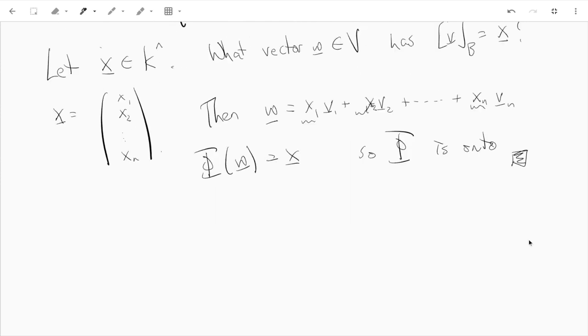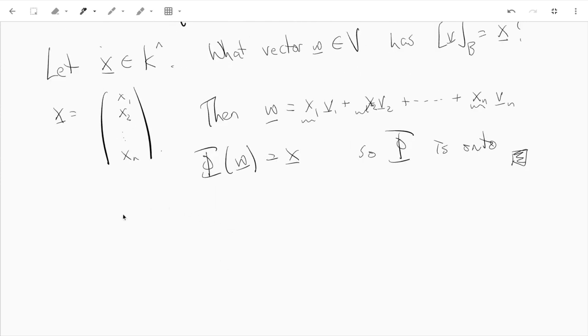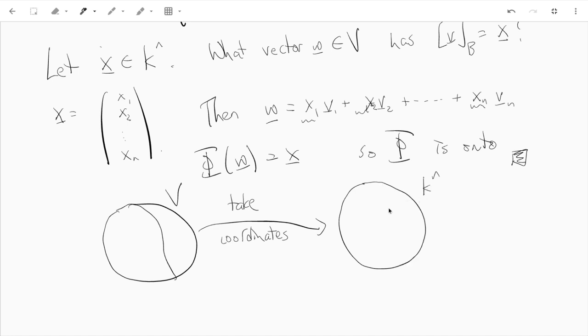So now, taking coordinates, it kind of like - we have this weird unfamiliar vector space over here, V. But we have a finite basis v1 up to vn, and when you take coordinates, once you do the work of finding a basis and finding out how to take coordinates, once you do that, you land in a very familiar space: K^n, like column vectors.